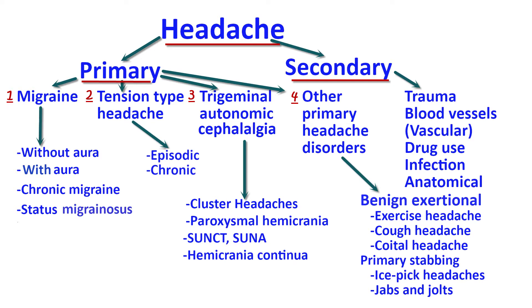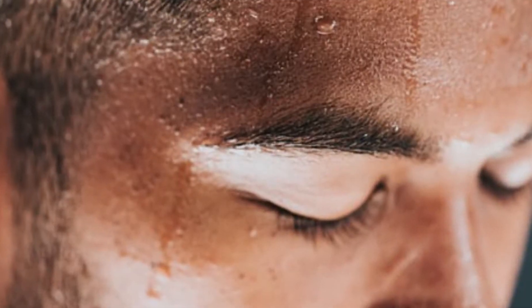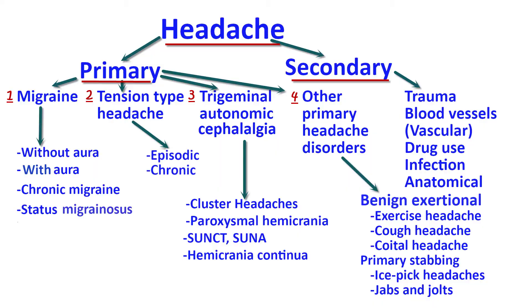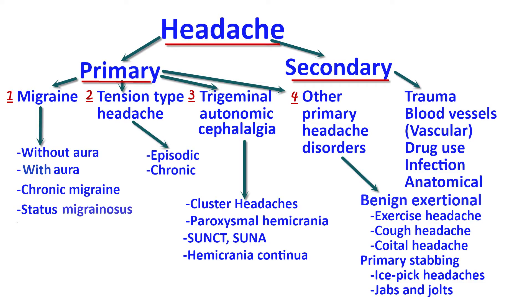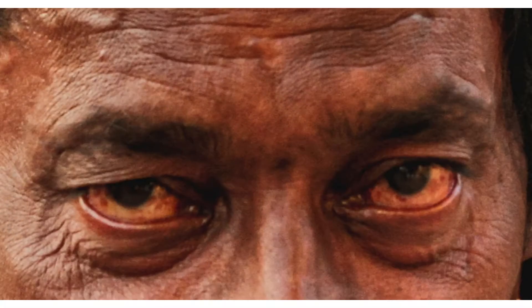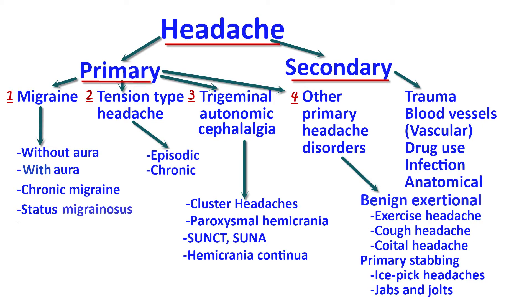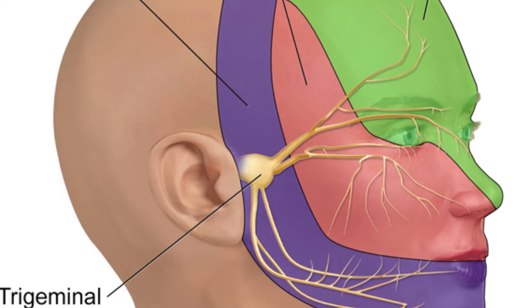Trigeminal autonomic cephalalgia (TAC) is the third group of primary headaches. These TACs include headaches that have symptoms of autonomic nerve stimulation. The autonomic nervous system controls glands such as sweat glands and secretory glands in the nasal passages, so patients with TACs experience runny nose, stuffy nose, sweating in parts of the face, conjunctival injection, and tearing from the eyes. The headache pain arises in the distribution of the nerves and vessels accompanying the trigeminal nerve in the face and head.